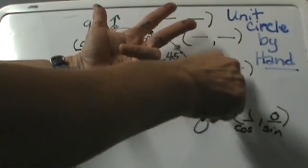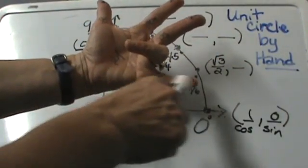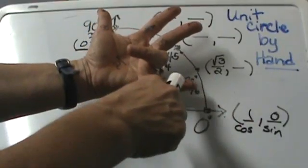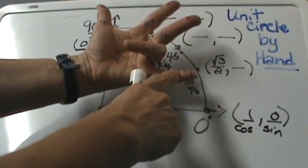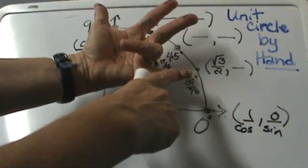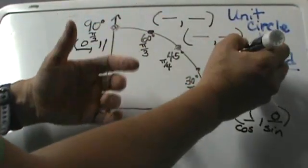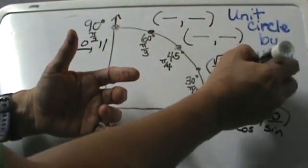Now what am I going to get for the sine? This lower part is the sine or the second coordinate. I only have 1 finger so this is going to be the square root of 1 over 2. We know the square root of 1 is just 1 so it is a half.